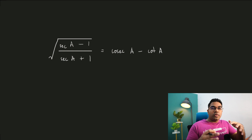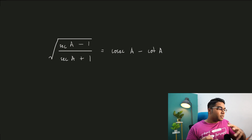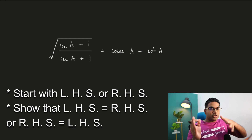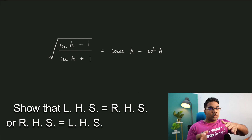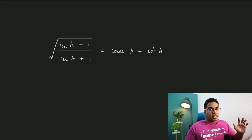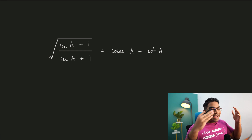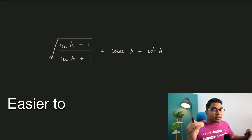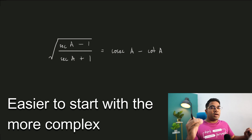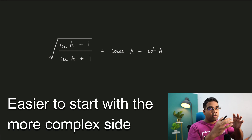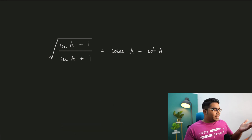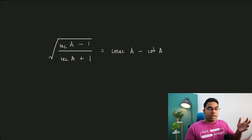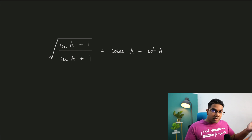When we are doing proving of trigonometric identities, we can either start with the left hand side or the right hand side and show that it equals the other side of the equation. Technically you could begin with any side, however it would be easier to simplify rather than to start with a simpler form and make it more complex. In this case, I would say the left side is a bit more complex, so let's begin with the left side.